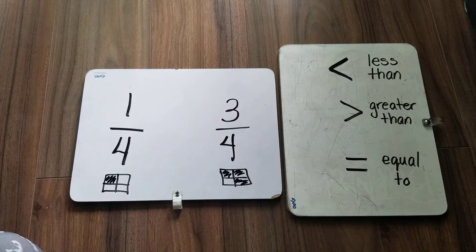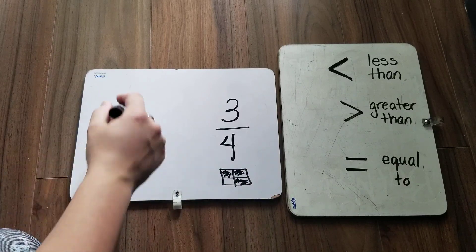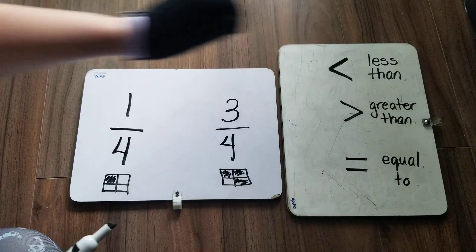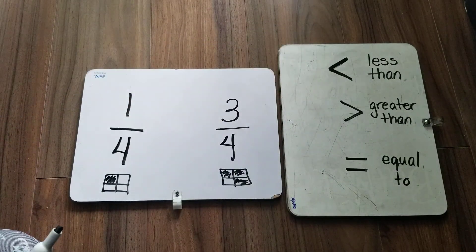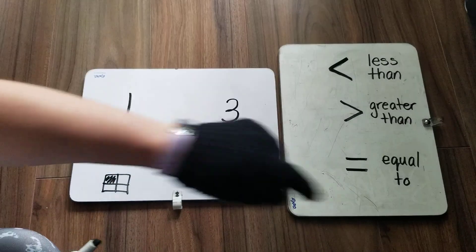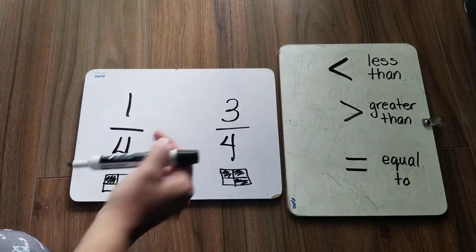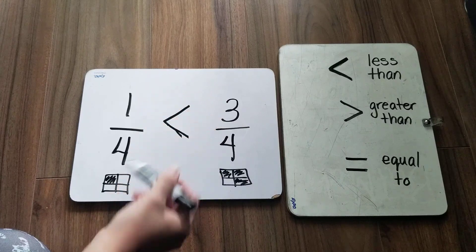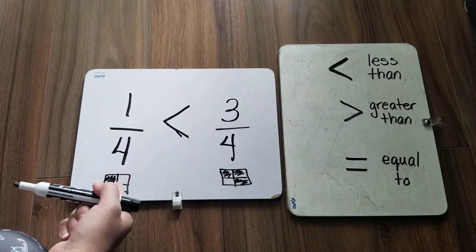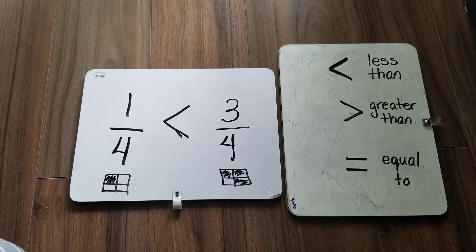So which one is larger? Well, is one over four less than three over four? Is one over four greater than three over four? Or is one over four equal to three over four? Well, I'm going to say one over four is less than three over four because I can see here that this one takes up less space. It's covering less space.